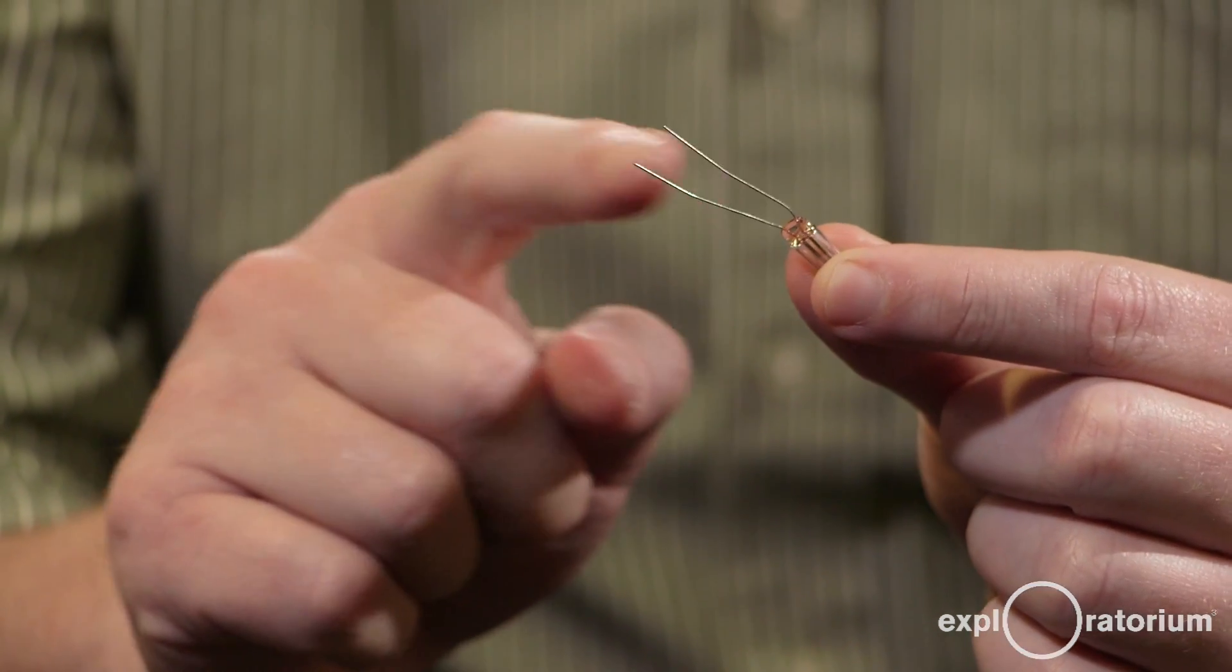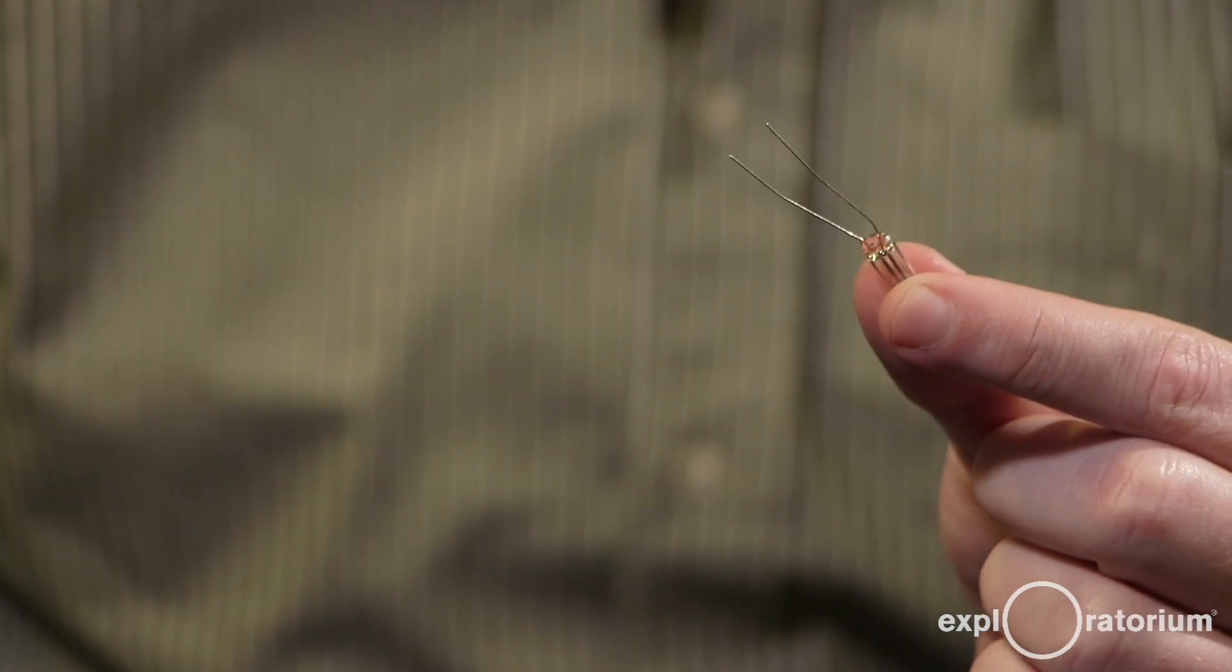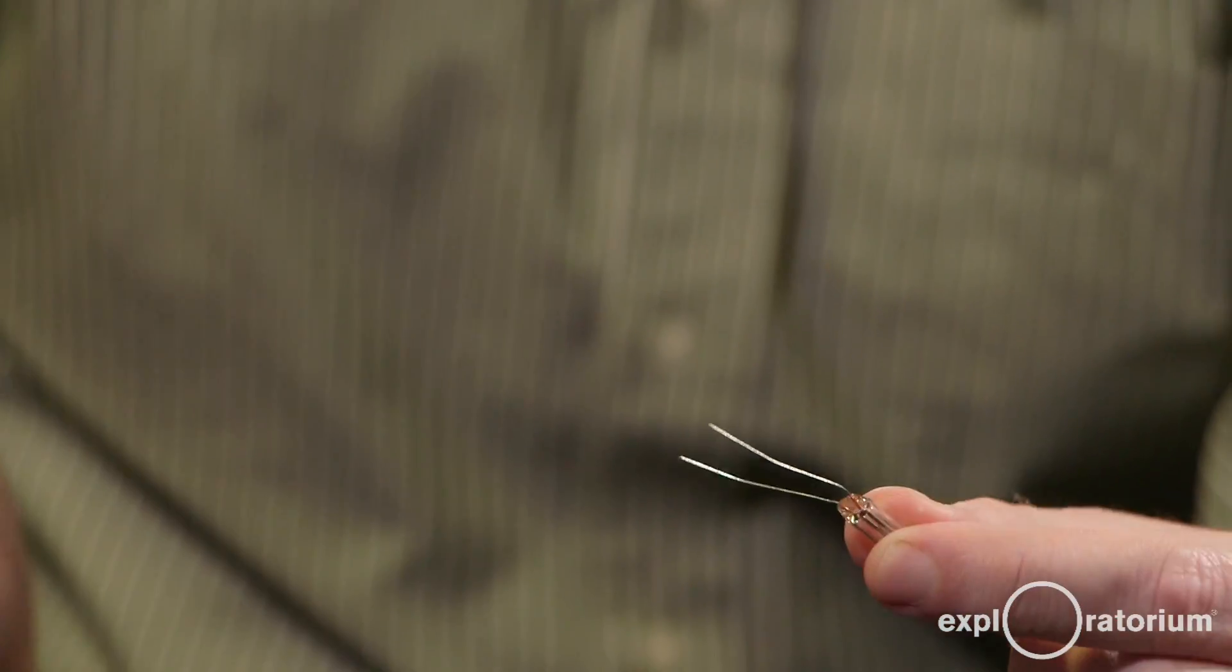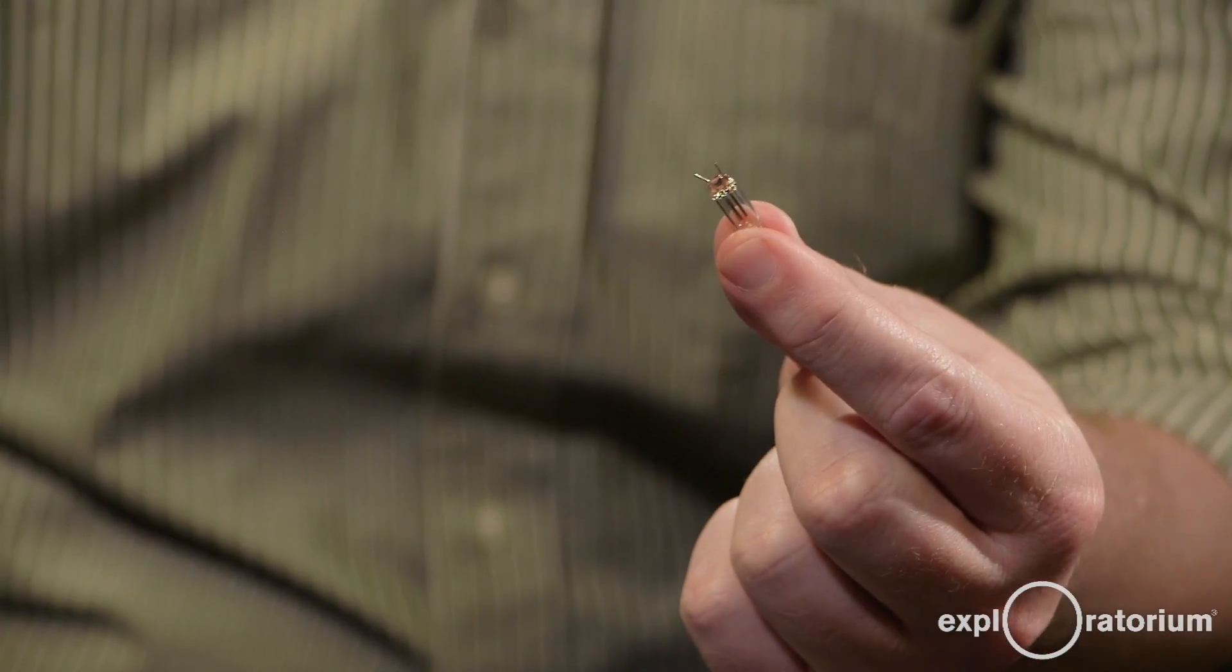They come with these long wire legs on them for wiring them into a circuit, but we don't need them. In fact, they will cause sparks inside the oven, so we'll want to cut those off. So we can just snip them off with a pair of scissors or wire cutters. You just want to cut them relatively close to the glass.